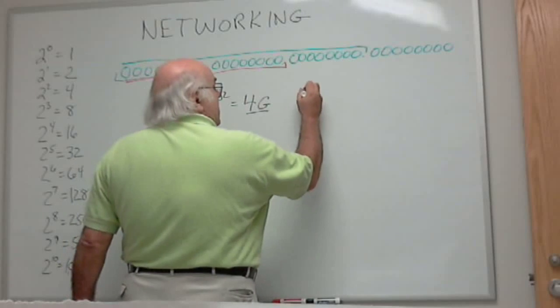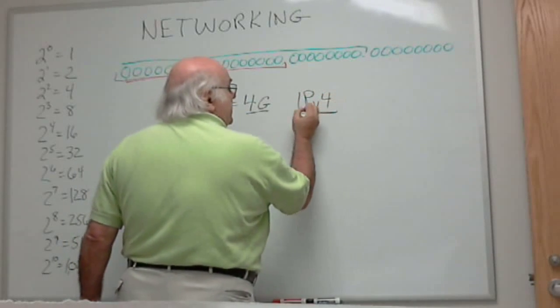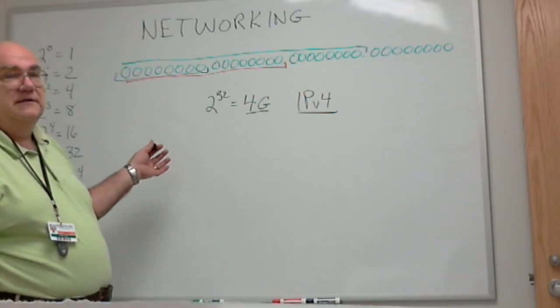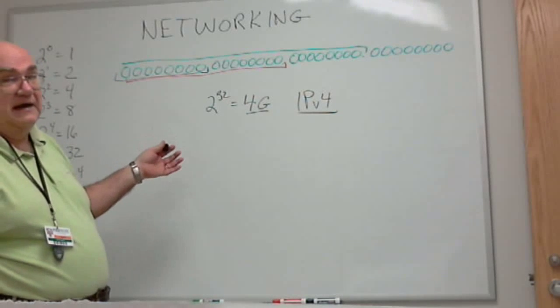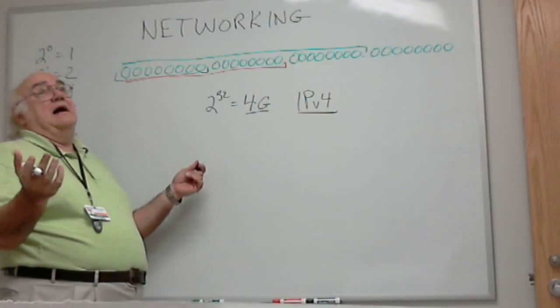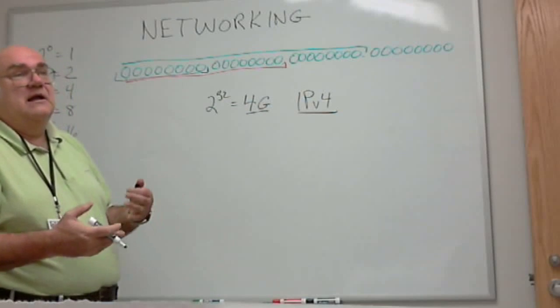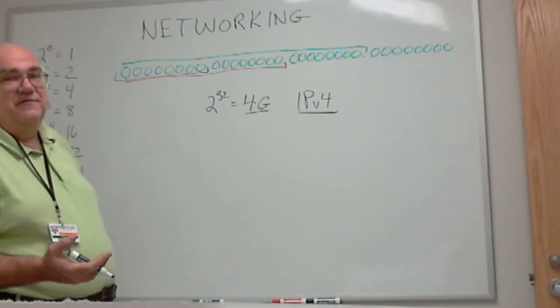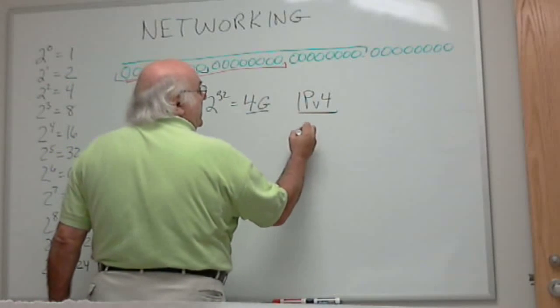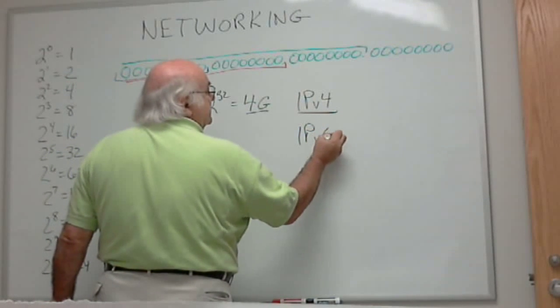This is IP version 4. This is what runs the internet right now. We're converting. The Japanese have already converted. The United States is catching up, but it costs bucks to do this. Obviously we don't want to spend the money. So, we're kind of doing other things to make IPv4 last a longer time. However, the world is going eventually to IP version 6.